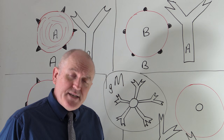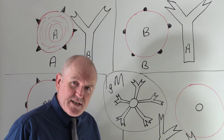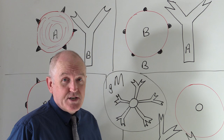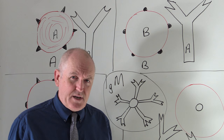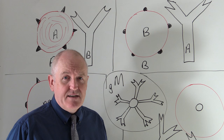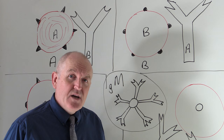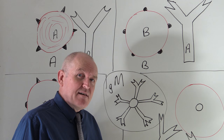The next blood group I want to introduce is the rhesus factor. The rhesus factor is so called because it was discovered using rhesus monkeys. It is actually a complicated factor with many subgroupings, like C, D, and E subgroupings. But the one that is immunologically active and can act as an antigen is the D factor. So when we talk about the rhesus factor, what we are really talking about is the D factor.